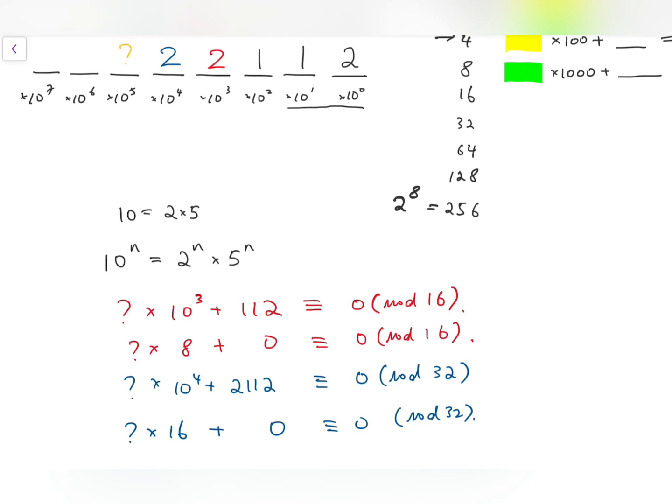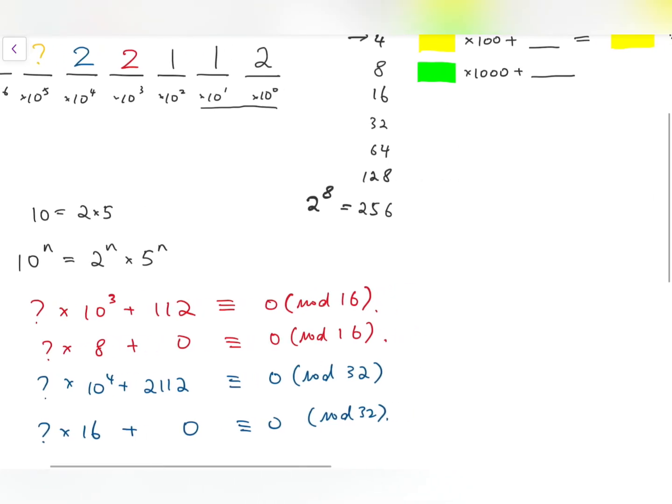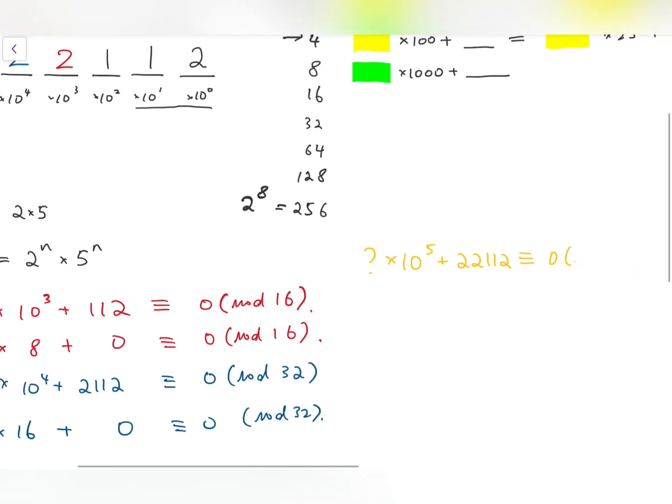Then we have the orange question mark. The orange question mark times 10 to the power 5 plus 22112 is congruent to 0 mod 64. So we have the question mark times 32 plus, for this number, if we divide by 64, we get 32 again.